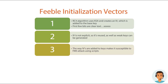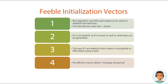FMS attacks take advantage of weaknesses in the RC4 key scheduling algorithm to reconstruct messages and determine what the key is. We do this with simple scripts. In fact, a lot of the tools we use for hacking wireless networks — like Aircrack and AirSnort — actually have the ability to exploit this type of weakness. Another weakness in the initialization vector is the fact that there's really no way to detect that the message has been tampered with.